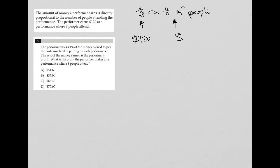Now question five says the performer uses 43% of the money earned to pay the cost involved in putting on each performance. So 43% of earnings equals cost. On this test, we know that percentages will always be turned into decimals, so I'm going to just say 0.43 just to remind myself of that.